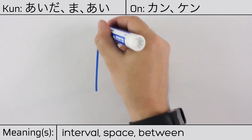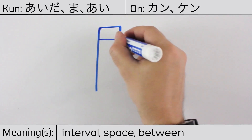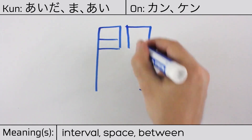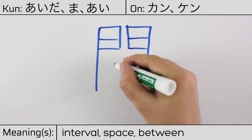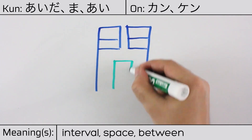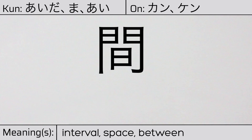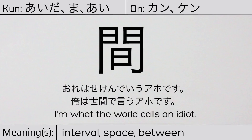This character is made up of the following radicals or parts: gate or door radical, mon, on the outside, and sun or day on the inside. You can remember this kanji by the following hint: the sun viewed through the open gate, during a certain interval of the day. Our example sentence is: Ore wa seken de yuu aho desu — I'm what the world calls an idiot.